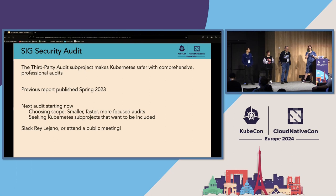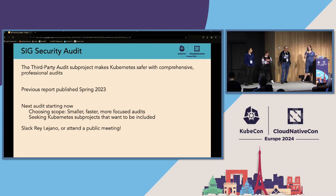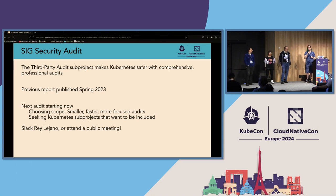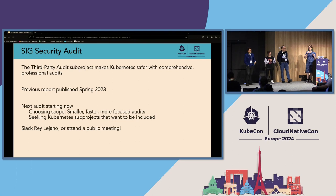As part of that, they are happy to work with folks interested in contributing to the audit process by working with vendors, and are also seeking Kubernetes sub-projects that want to be included in the scope of the next audit. If you have a particular feature area or sub-project in Kubernetes that you'd like included, you can reach out to the SIG Security third-party audit sub-project lead, Ray Lejano, on Kubernetes Slack, or attend one of their public meetings. Public meetings are currently being rescheduled to be more accessible to folks in European time zones — join the mailing list to get the invite for the new time.